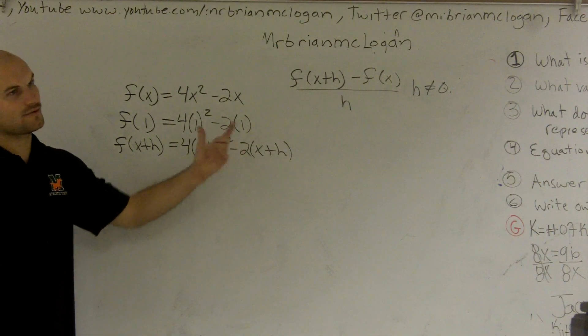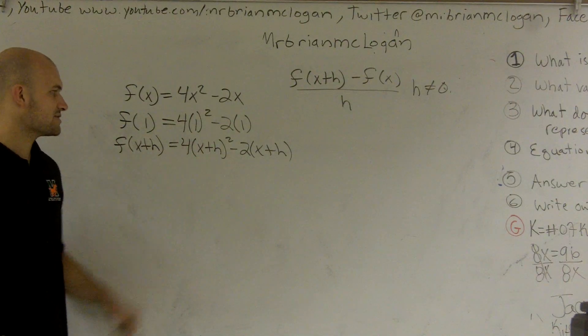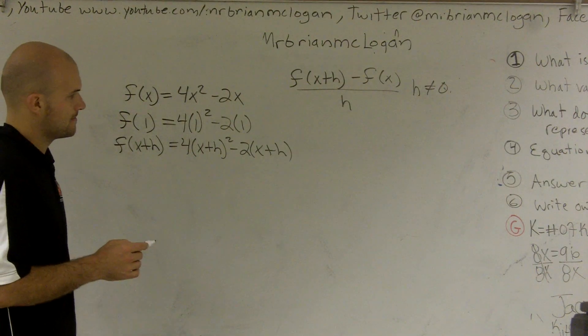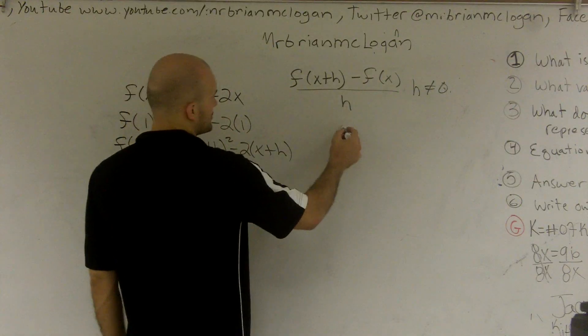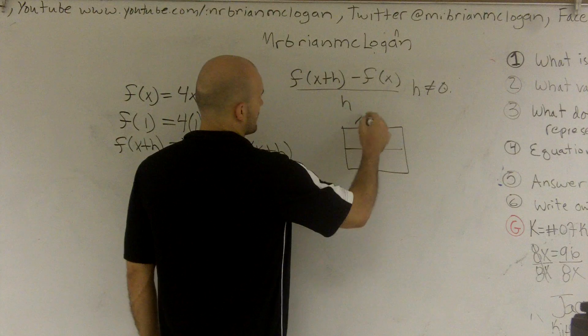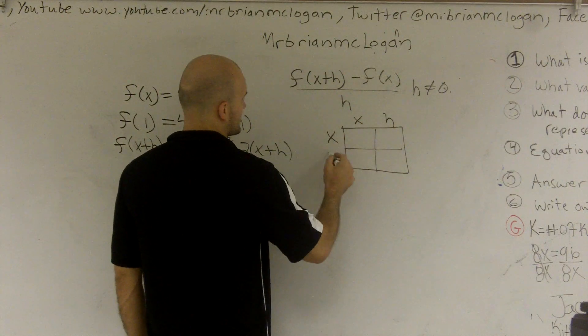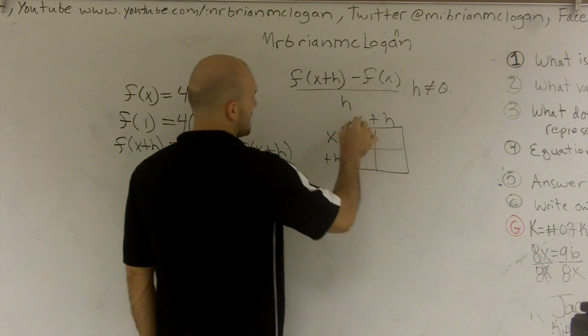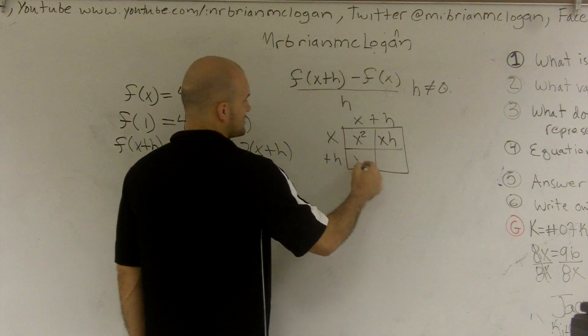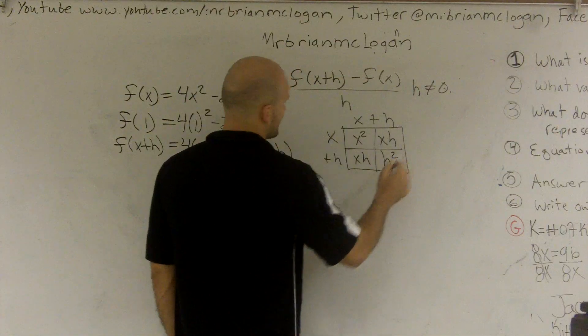So let's go ahead and figure what this is going to be. Alright, remember (x+h) squared. I'll break this down really good. x, h, x plus h. x times x is x squared. x times h is xh. x times h is xh. h times h is h squared.